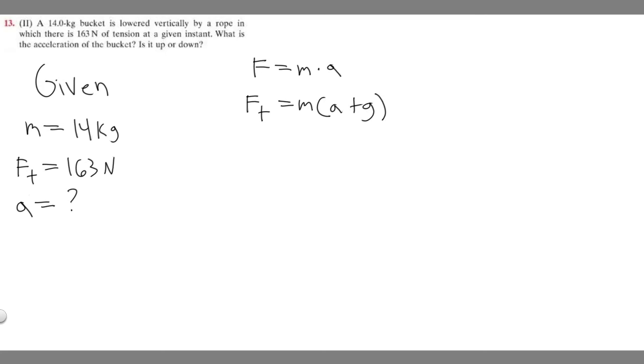Keep in mind they're asking us for acceleration. We're given force and mass, but we have to find acceleration. So we should manipulate this equation to solve for acceleration. If I divide both sides by m, we get a + g = F_T/m. To get a by itself, subtract g from both sides. So we get a = F_T/m - g.